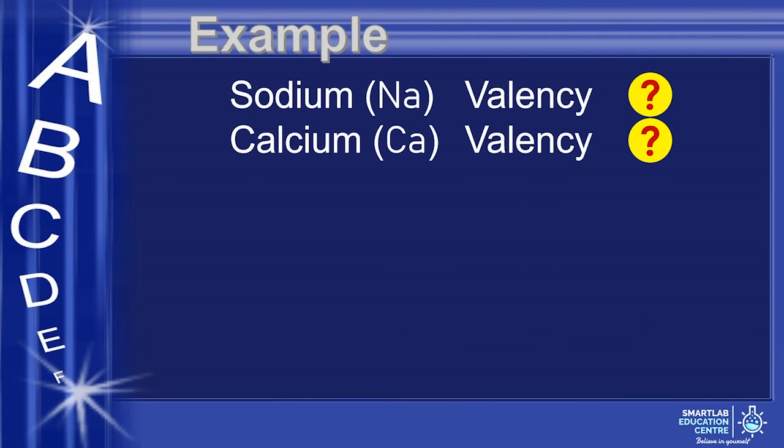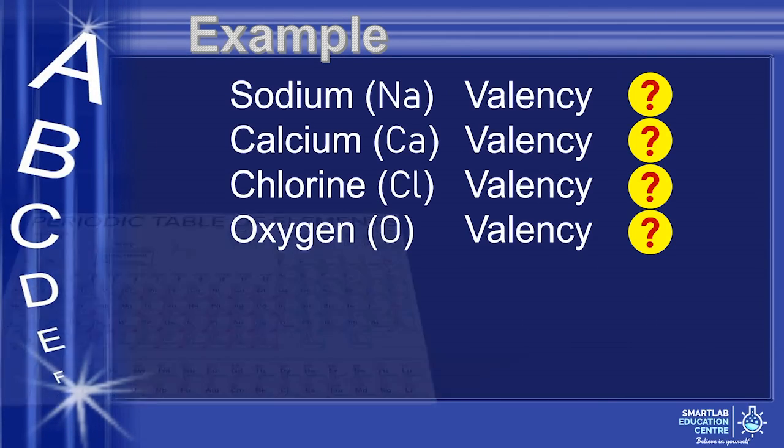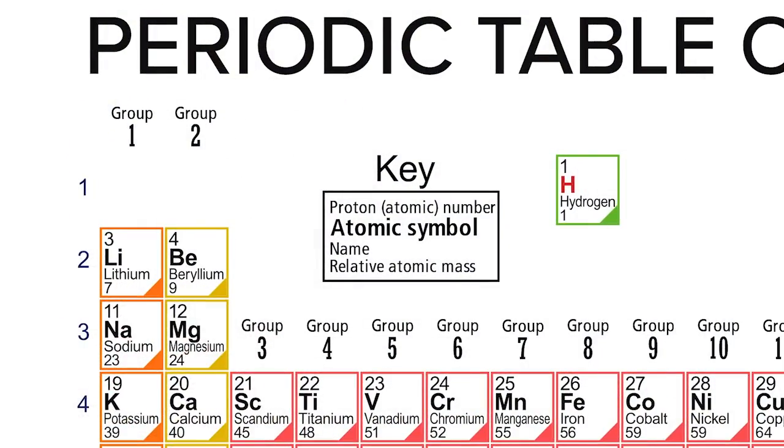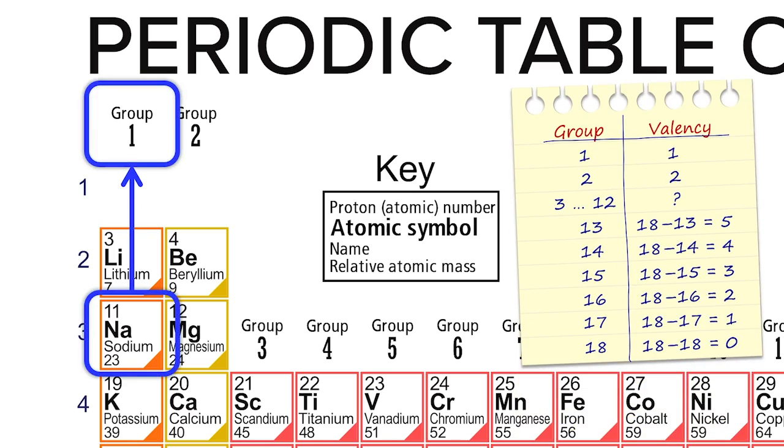Let's find out the valency of some common elements. To be able to do that, we need to take a look at the periodic table. Sodium belongs to group 1, so its valency is 1.